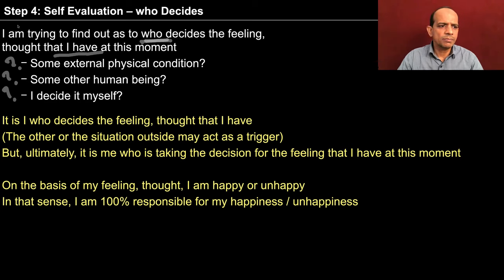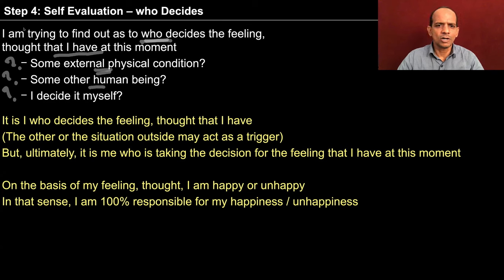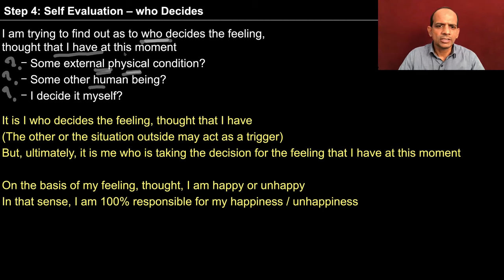So you'll see that the feeling within you is not being decided by some other human being or even some physical condition. Let's say you go home and find that your room is not in good shape — things are scattered — and you start feeling angry. Then you find that a child came to your room, a very innocent child who doesn't know how to keep things in order, and that's why the room went into a bad shape. Then observe what your feeling is. When you assumed somebody made your room in such a pathetic condition, you felt angry. But when you learned it was a child, your feeling changed — because your interpretation of the situation changed.